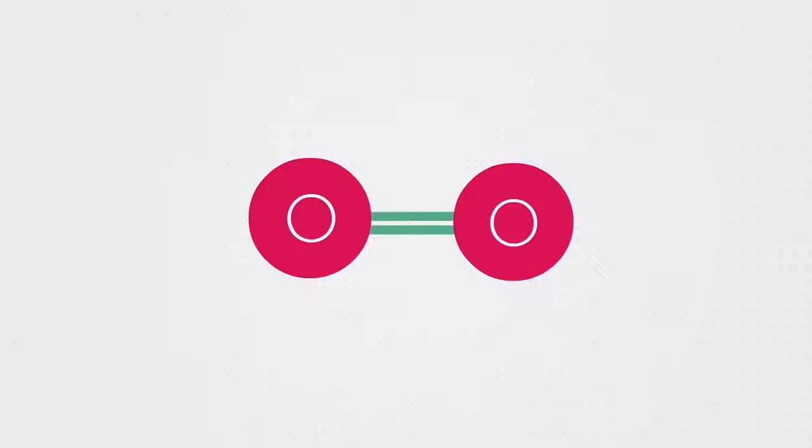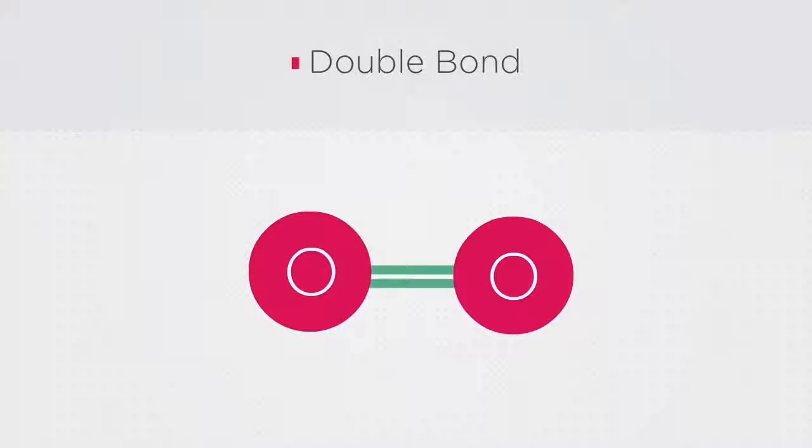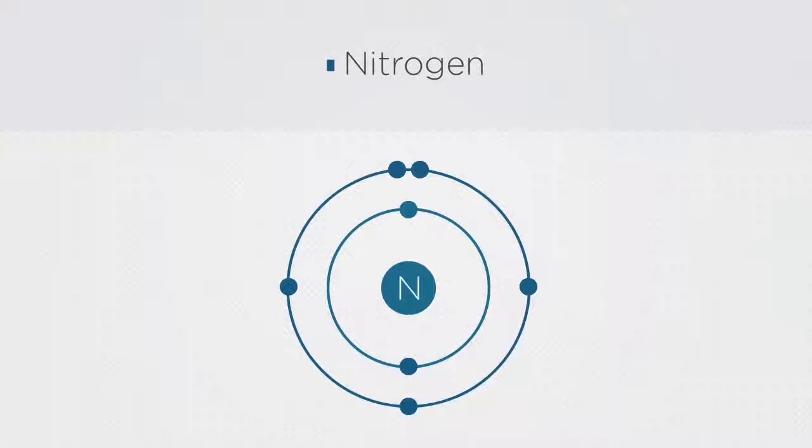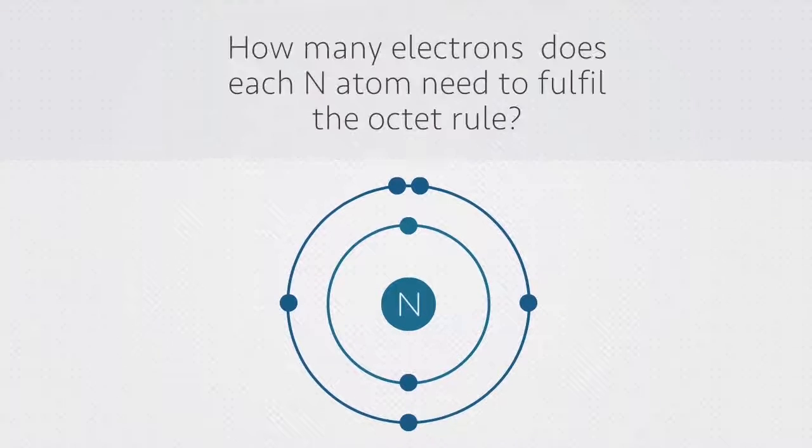Each of the nitrogen atoms has five electrons in their outer shells. How many electrons therefore do you think each will need to share to fulfill the octet rule?